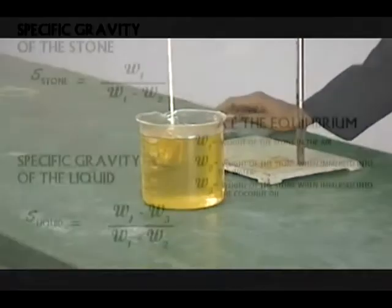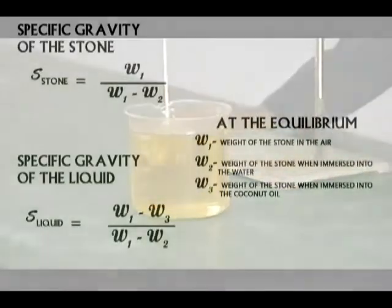The ratio of the difference between the mass of the stone in the air and the weight when fully immersed in the coconut oil, and the difference between the mass of the stone in the air and the weight when it is fully immersed into water, gives the specific gravity of the coconut oil.